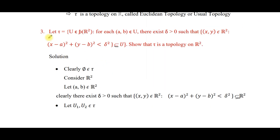Moving on to the third problem: let τ be the set of all U in the power set of ℝ² such that for each ordered pair (A, B) ∈ U there exists δ > 0 such that {(x,y) ∈ ℝ² : (x−A)² + (y−B)² < δ²} ⊆ U. That is, τ contains all sets such that an open disk of radius δ centered at any point is a subset of U. We have to show that τ is a topology on ℝ².